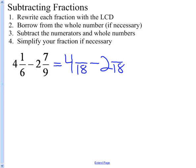So 6 times 3 is 18, so I also multiply 1 times 3 to get 4 and 3 18ths. 9 times 2 is 18, so I multiply 7 times 2 to get 2 and 14 18ths.